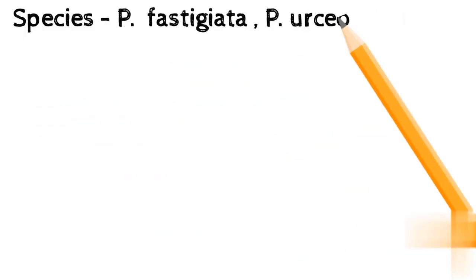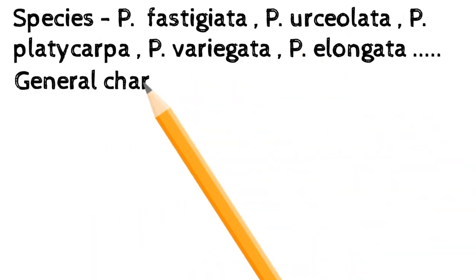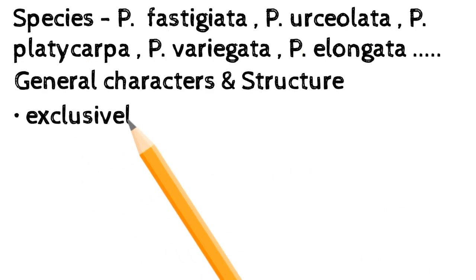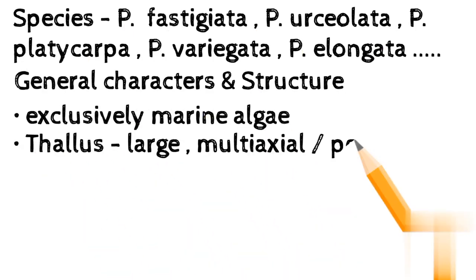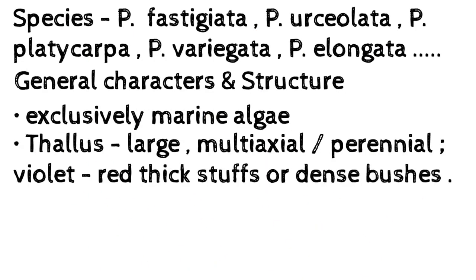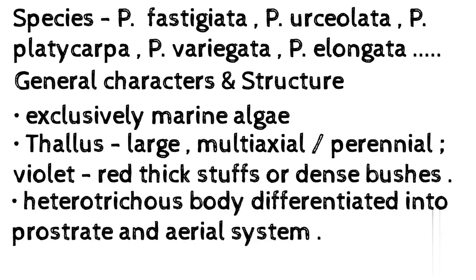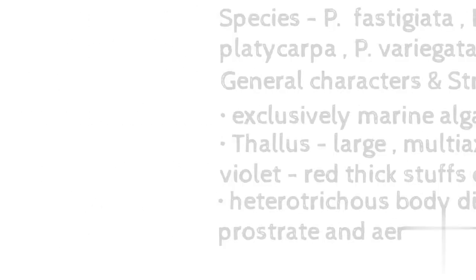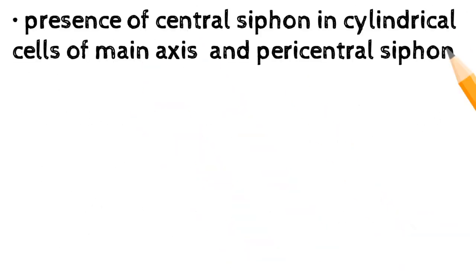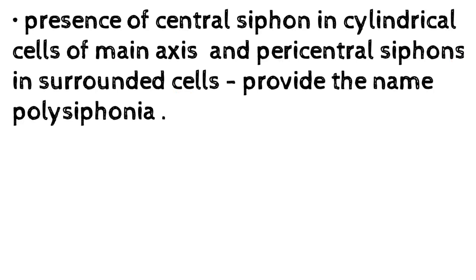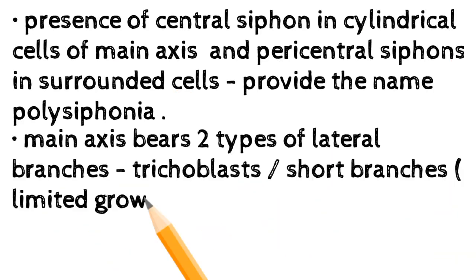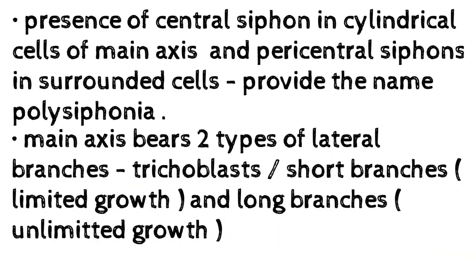General characters and structure: exclusively marine algae; thallus large, multi-axial, perennial, violet-red, forming thick tufts or dense bushes. Heterotrichous body differentiated into prostrate and aerial systems. Presence of central siphon in cylindrical cells of the main axis and paracentral siphons in surrounding cells provides the name Polysiphonia.